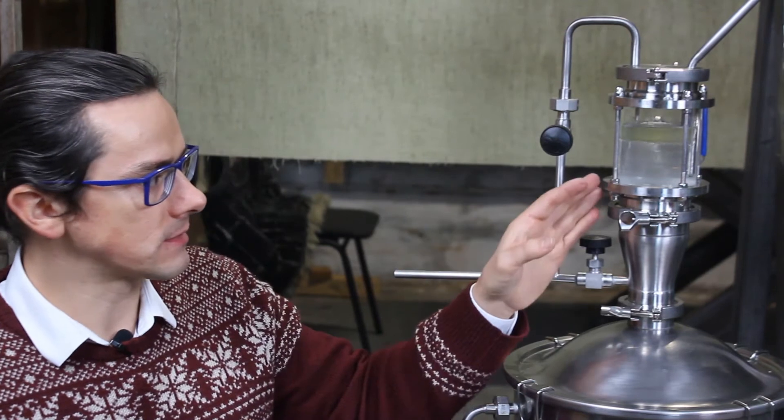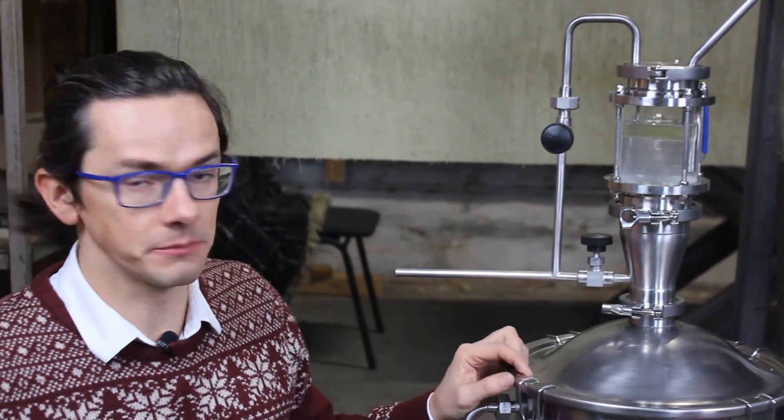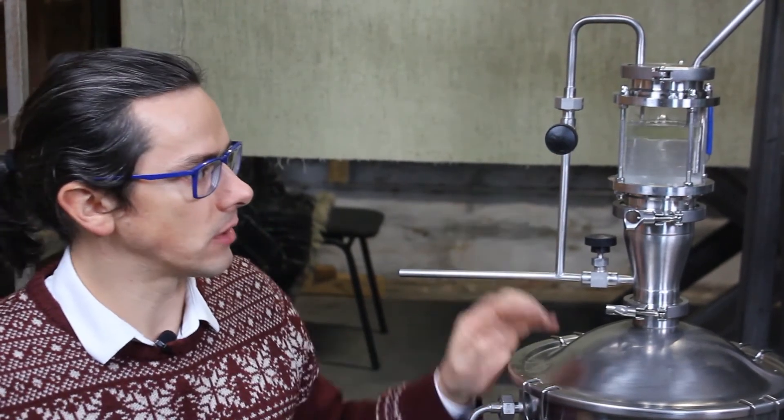So we are in the middle of the essential oil extraction process and you can see clearly that we have here hydrosol and rosemary essential oil on the top. It's around one and a half centimeter of the oil.